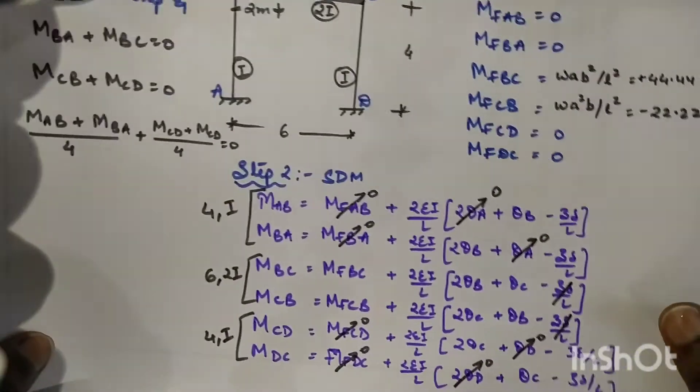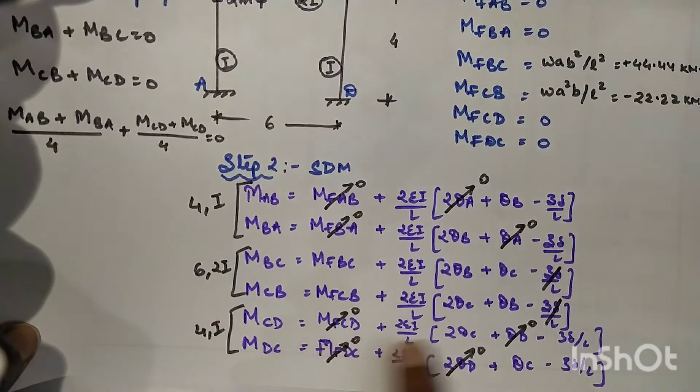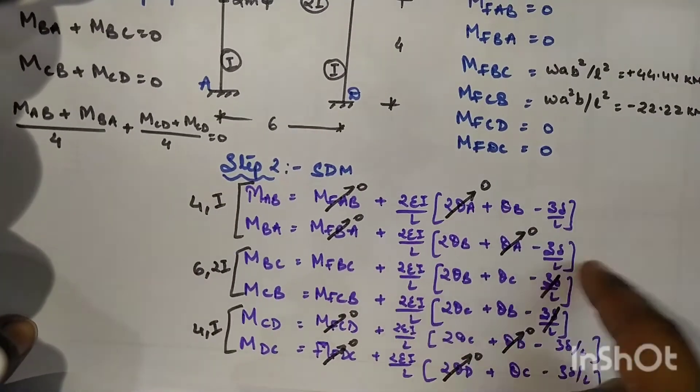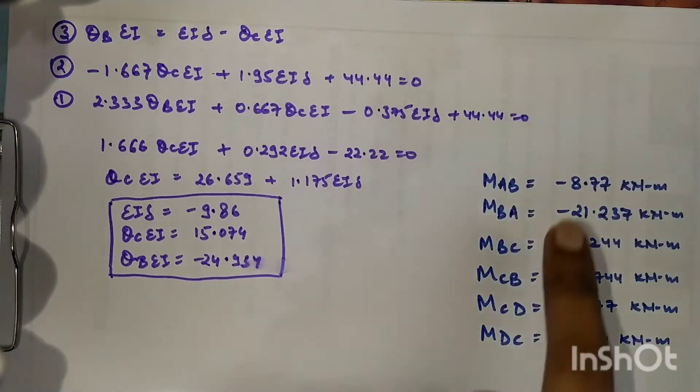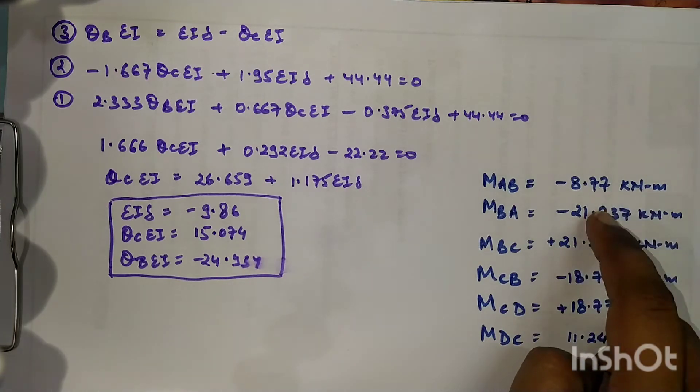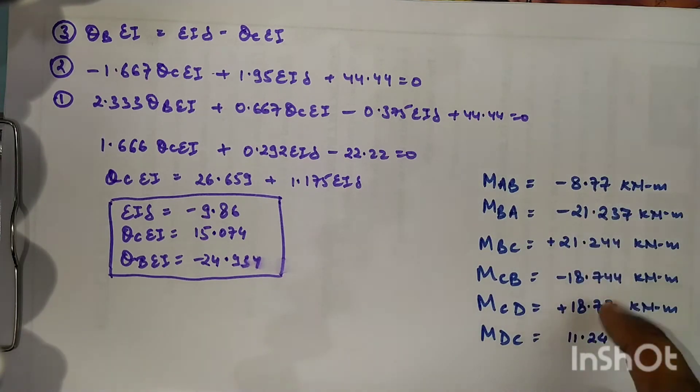So after substituting all these values in the main slope deflection equation with the value of length and EI, we will be getting these as final moments. We have to check that at the supports B and C we are getting equal and opposite moment.